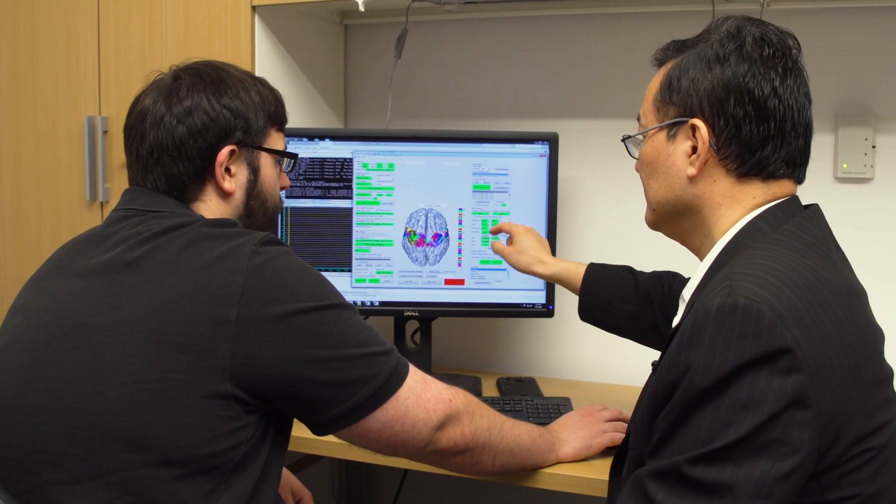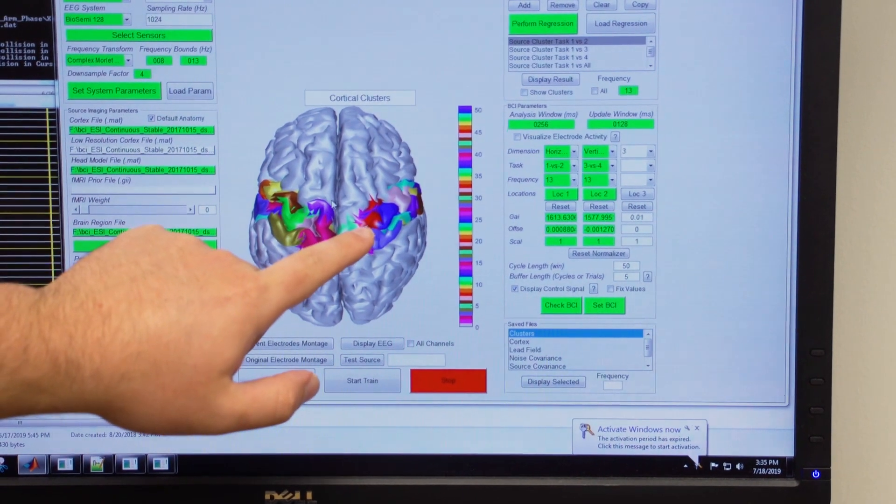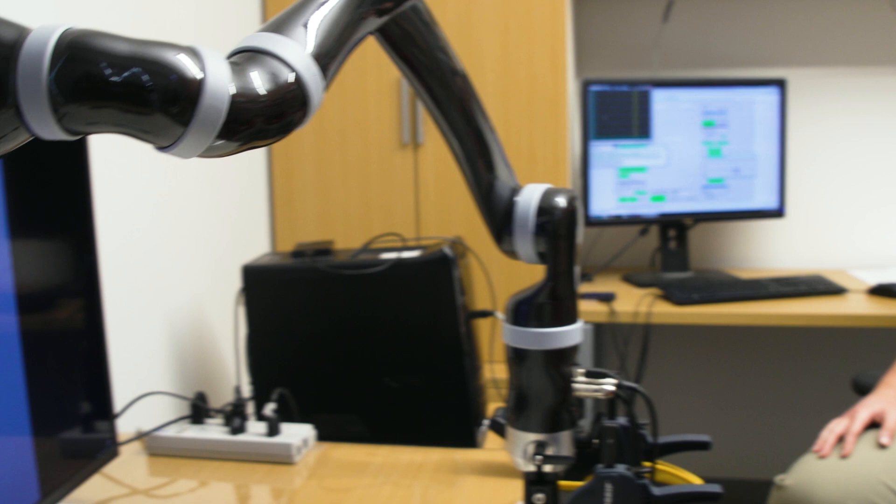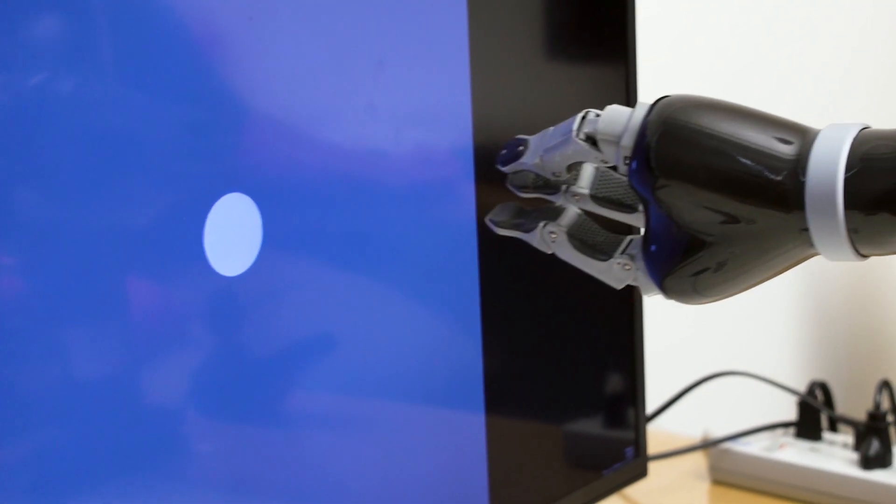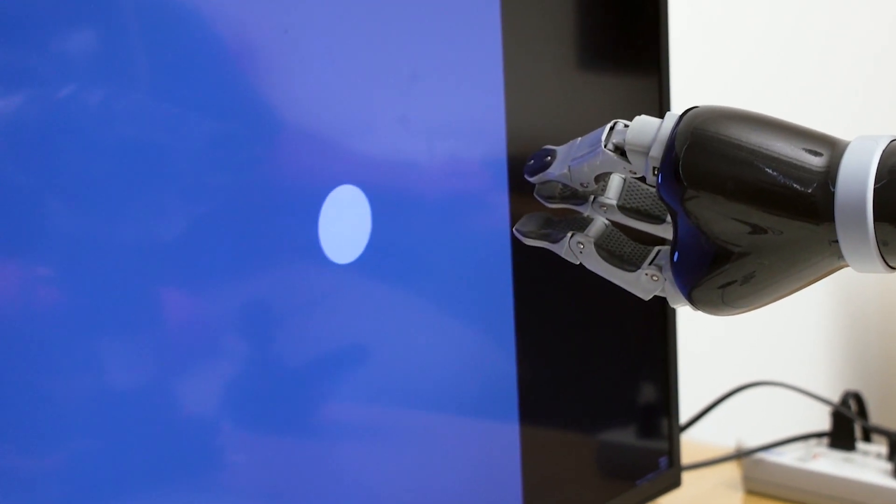We use machine learning technology to clean up the signals and pick up an extremely weak signal that reflects what we intend to do. Then we send that signal to an external device such as a computer, robotic device, to control a computer or robotics or even consumer electronics.